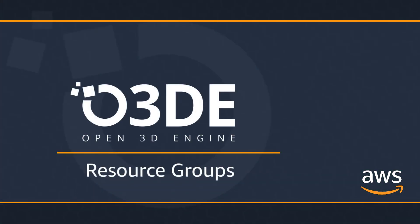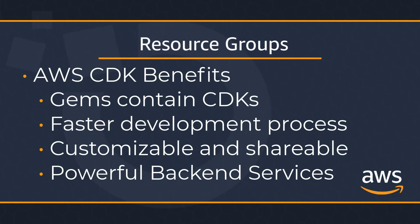To create an AWS connected feature, such as a metrics reporting pipeline, AWS GEMs use the AWS Cloud Development Kit, AWS CDK, to model and deploy resources. Each AWS GEM contains an AWS CDK application that defines the AWS resources that the feature requires. Because the AWS CDK applications model resources as code, you can extend or combine AWS CDK constructs to create powerful back-end services.